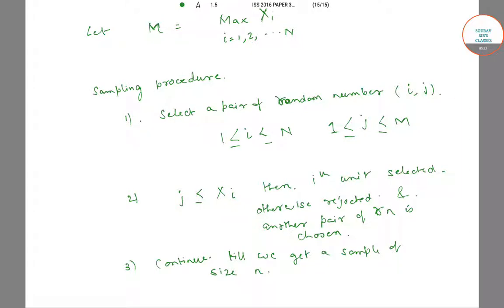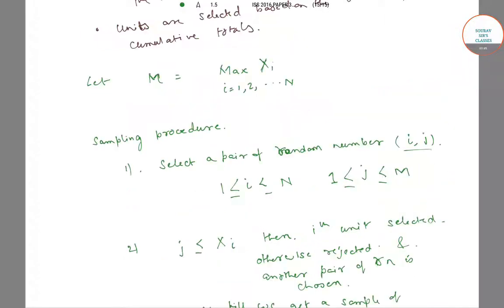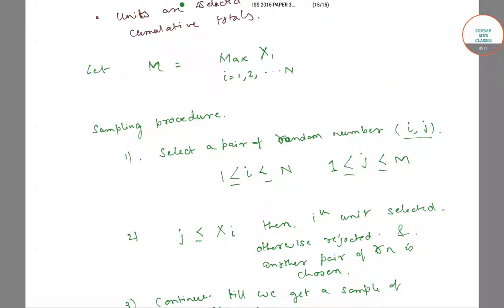We continue this process of selecting a pair of random variables i and j, where i lies between 1 to capital N and j lies between 1 to capital M. If j is less than or equal to xi, the ith unit is selected; otherwise the unit is rejected, and we select another pair. This is Lahiri's method of selecting a probability proportional to size sample from a finite population.